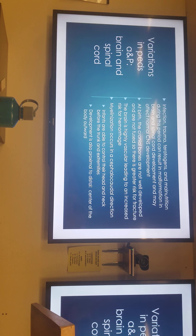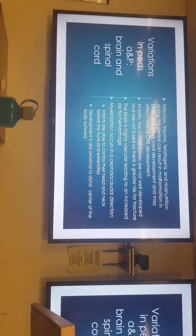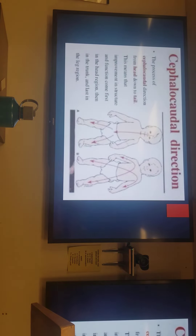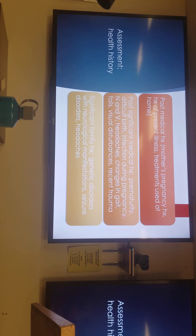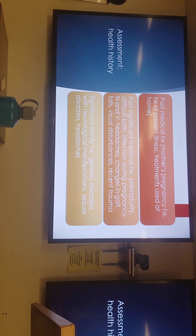Normalization occurs in the cephalocaudal direction - top down, head to tail. Infants are able to control their head and neck before they can control the trunk and extremities, and then proximal to distal. In our assessment, we want to look at and ask: was there anything significant during mom's pregnancy? Was she exposed to teratogens? What was the growth during prenatal development? Was she exposed to any infections? We also want to ask about history of present illness - how long have they felt like this, when did symptoms start, what have they done at home.